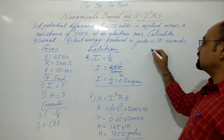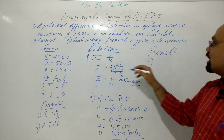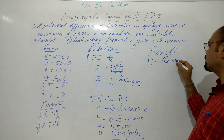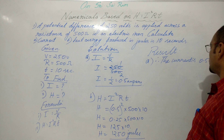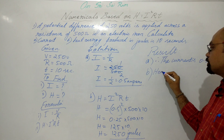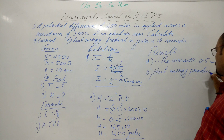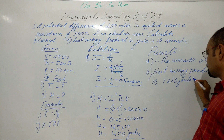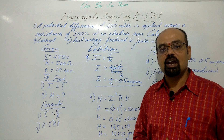Results: therefore the current is 0.5 amperes, and the heat energy produced is 1250 joules. This is how we solve this numerical. Now let's move on to the second numerical.